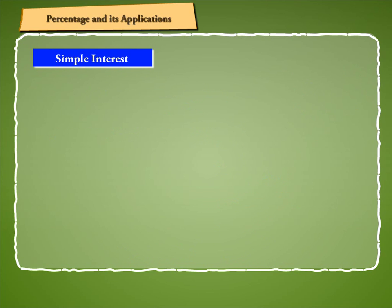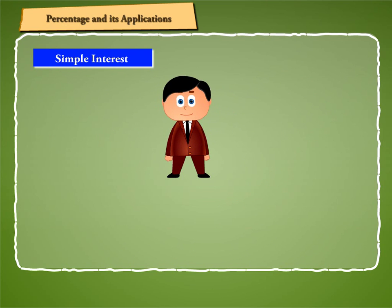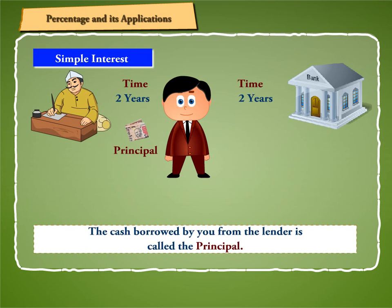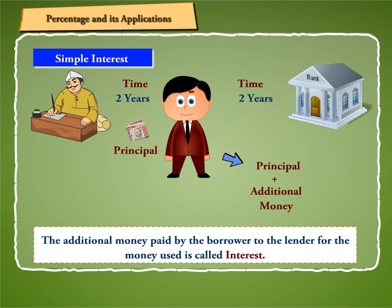Let us now learn about simple interest. Suppose you are in need of money for business. You will borrow it either from some money lender or from a bank. You will return it to the lender or bank after a fixed time. The cash borrowed by you from the lender is called the principal. After the fixed time, you will give back to the lender not only the money you borrowed but also an additional sum for the use of his money. The additional money paid by the borrower to the lender for the money used is called interest.